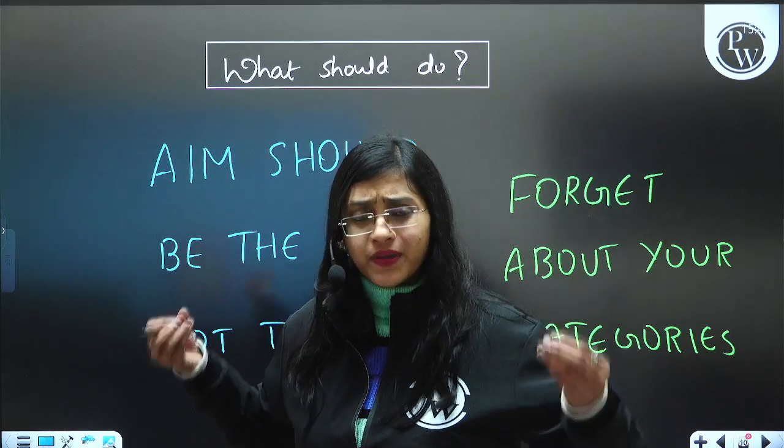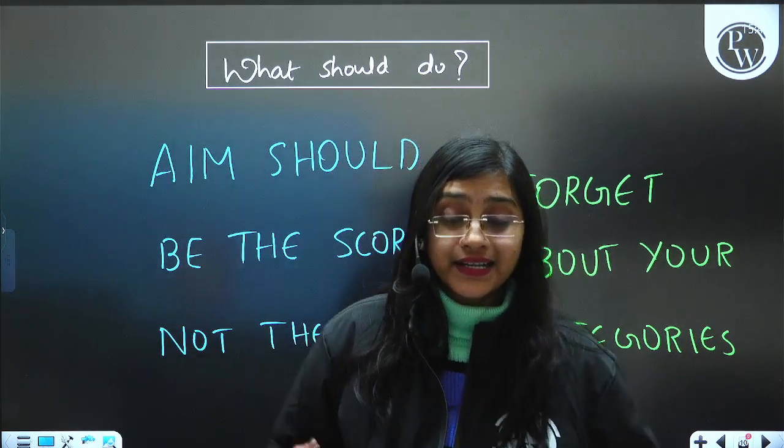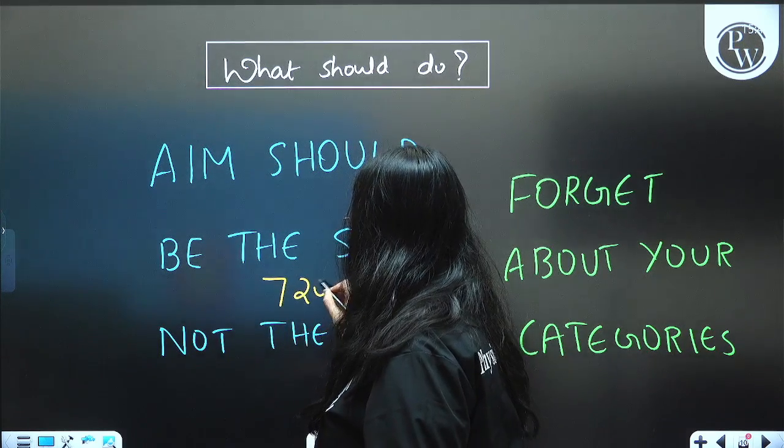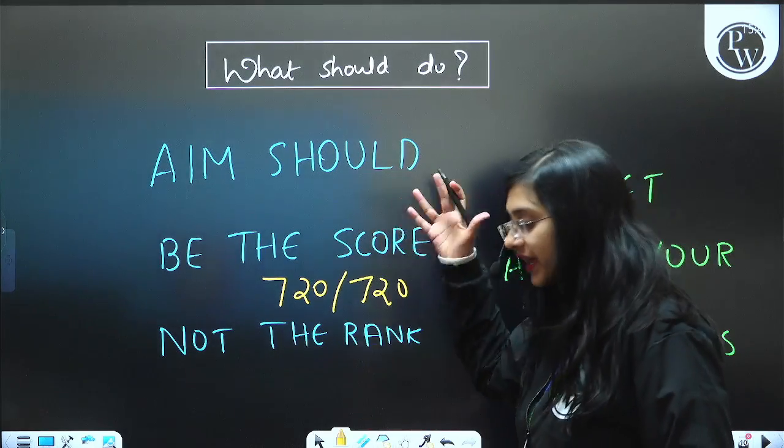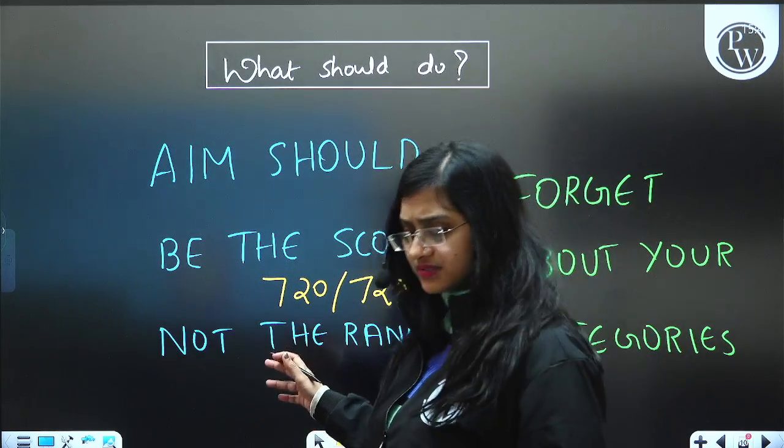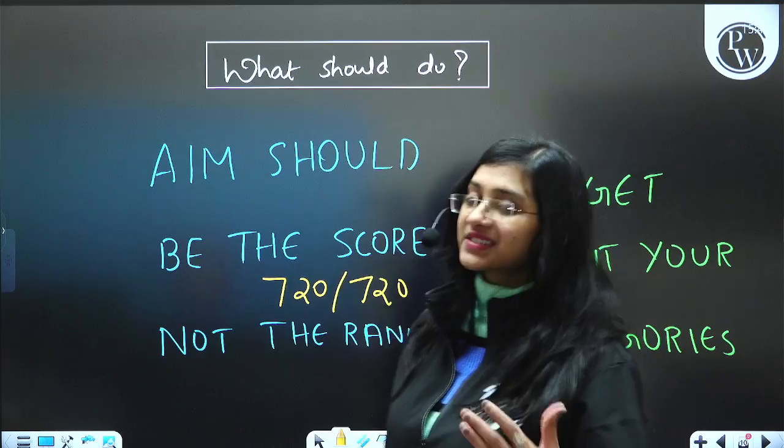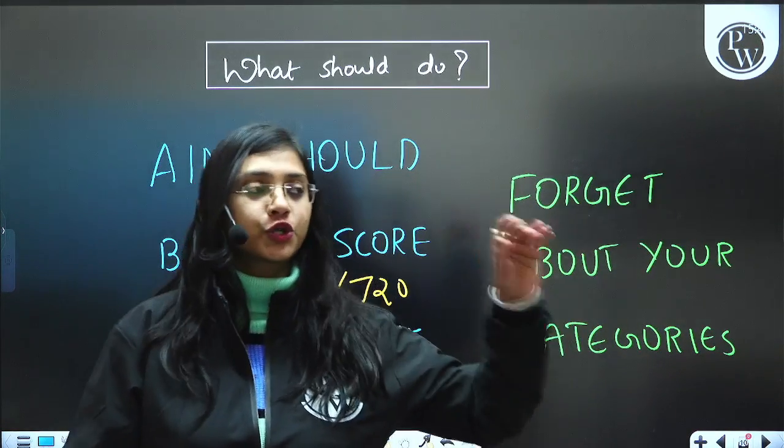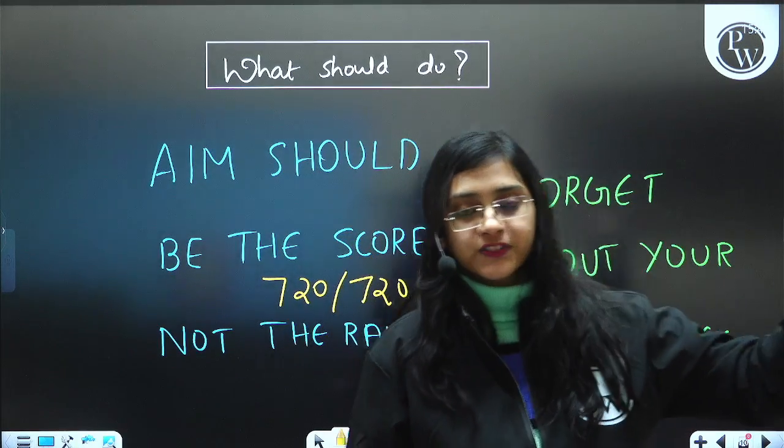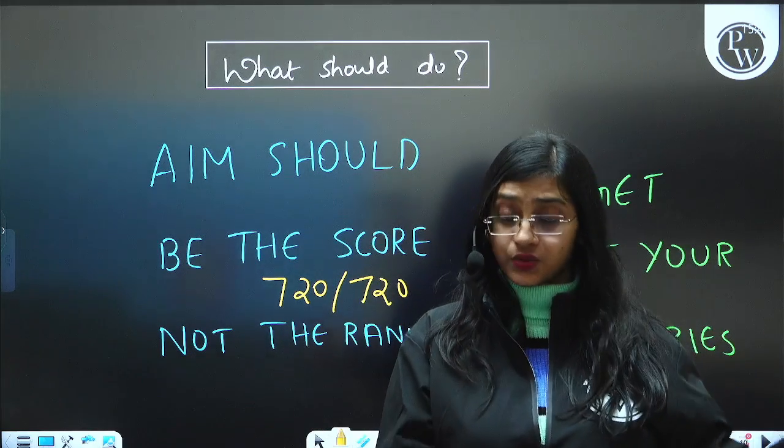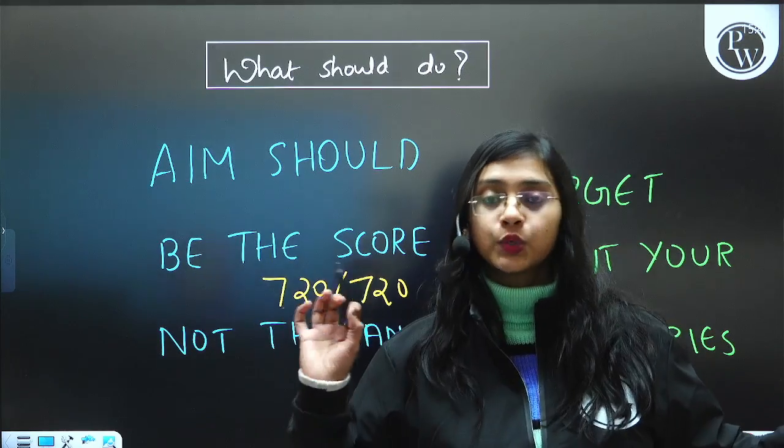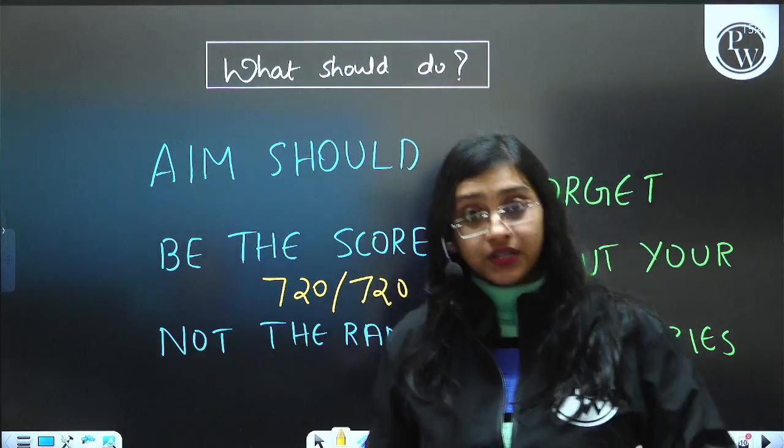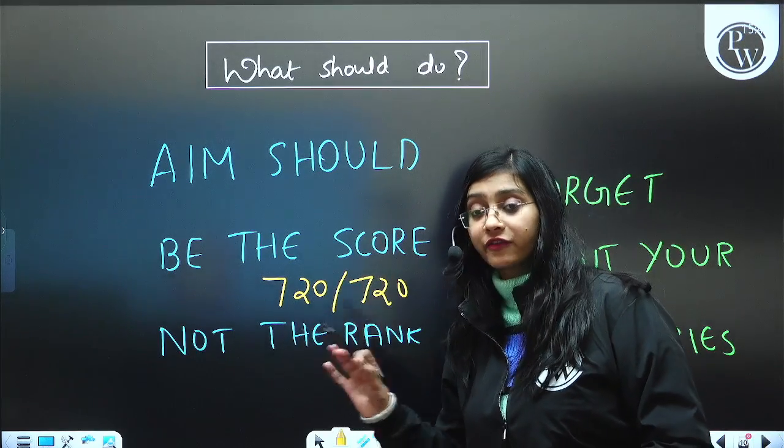So, please do forget about your categories and don't aim about a particular rank but you have to aim about the score. Now, what should be your aim score? How much you should be scoring in NEET 2024? The score should be, your aim should be 720 out of 720 because if you aim this, you will be getting at least something around 700 plus. When I say aim, it is not just aiming, you also have to work towards your aim. But when you are thinking of, I should be getting this much score to get into this particular college, don't think if I get 600 plus, it is okay because if you aim for 600, you will get 500 out of 720 and which will shatter your dream. So, that is why aim for full marks, not for any rank.